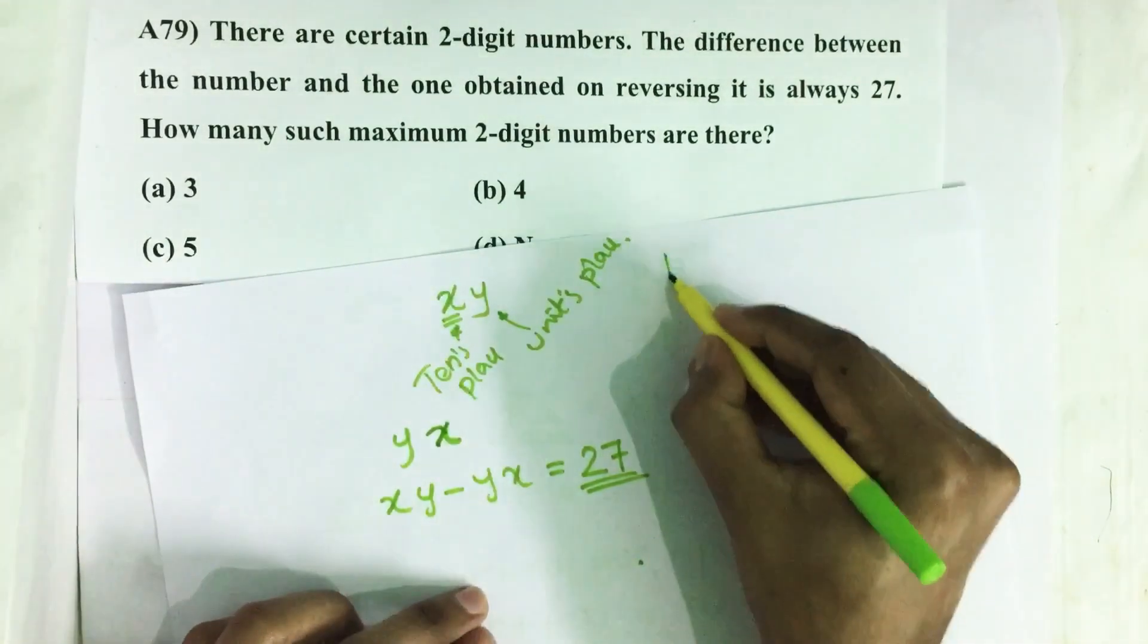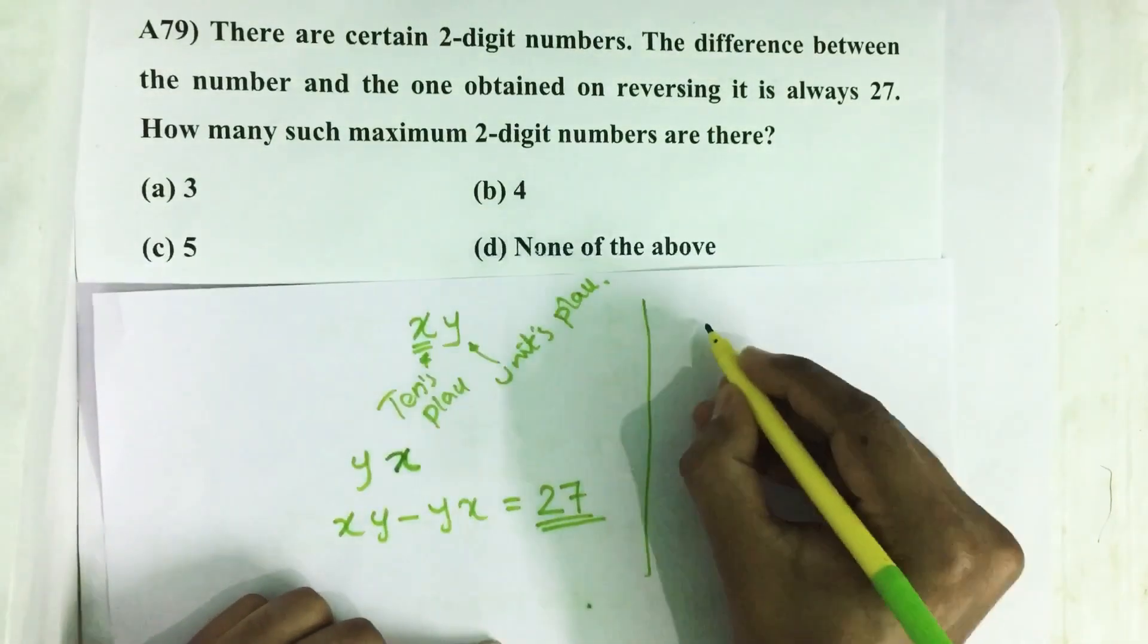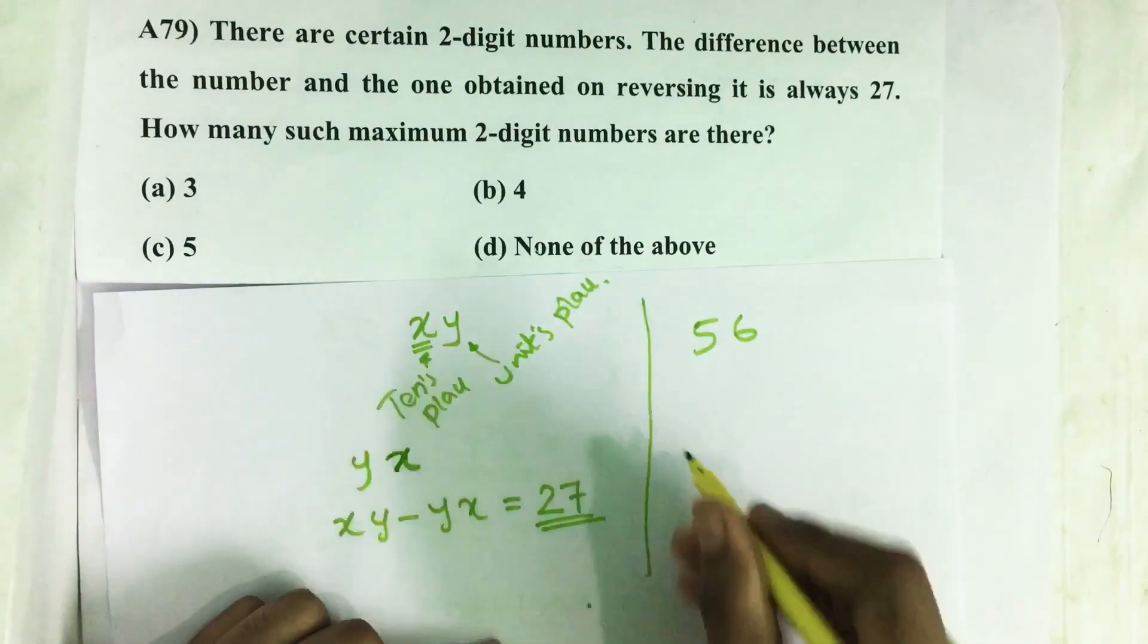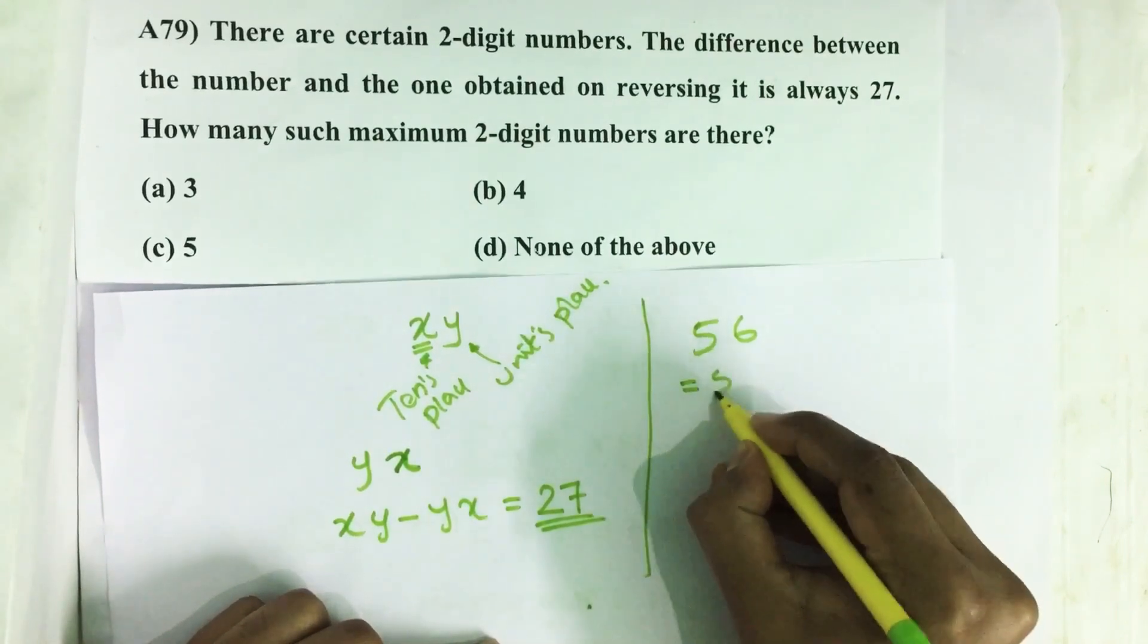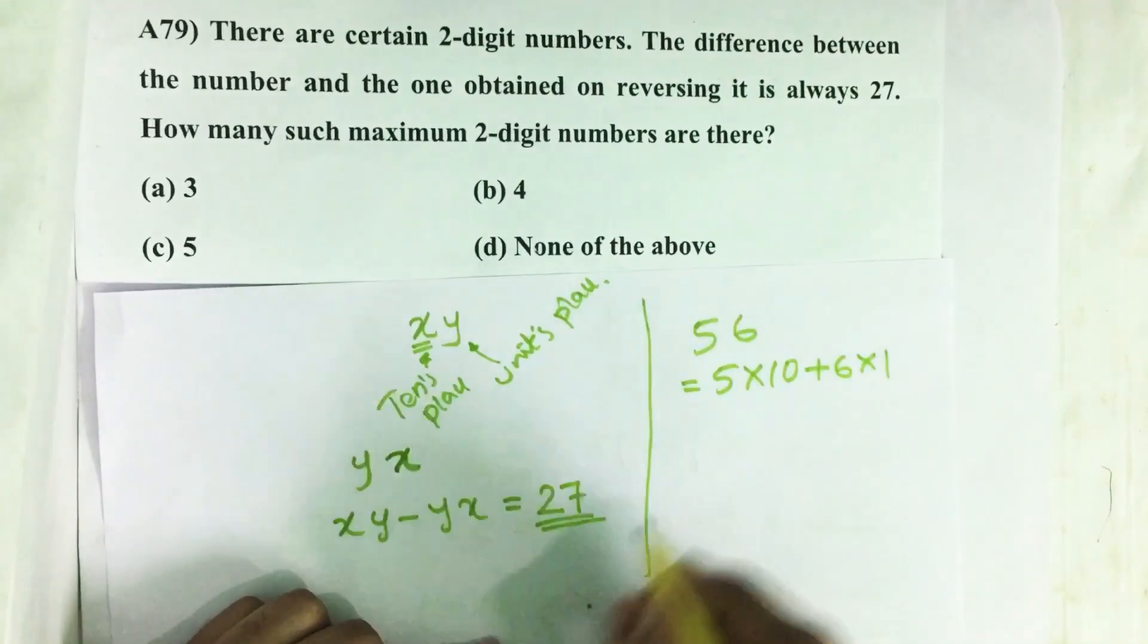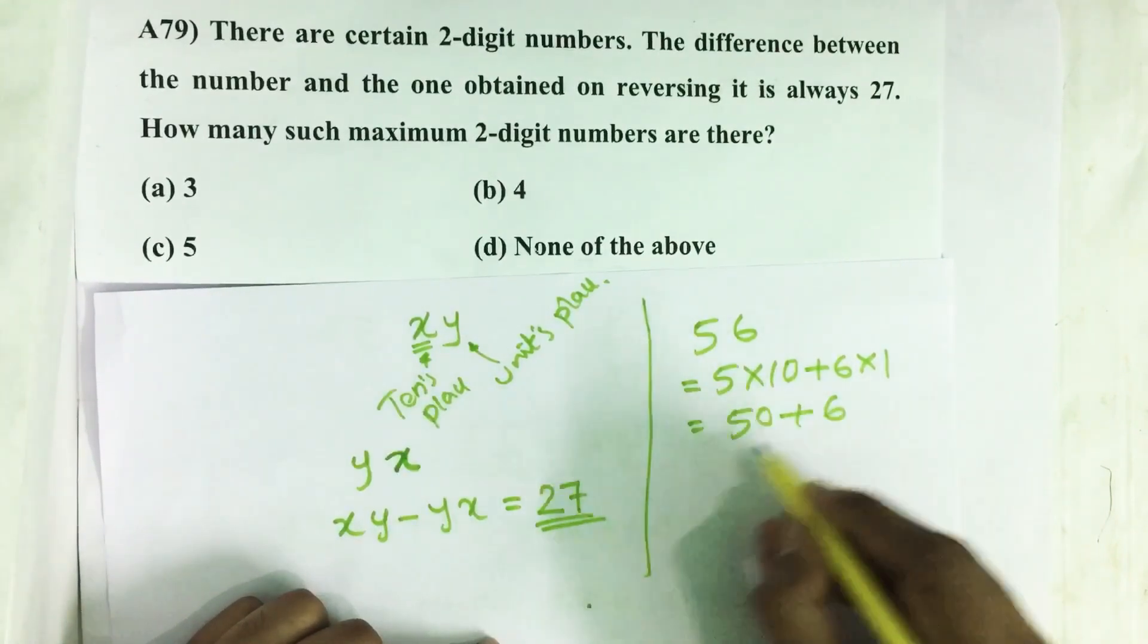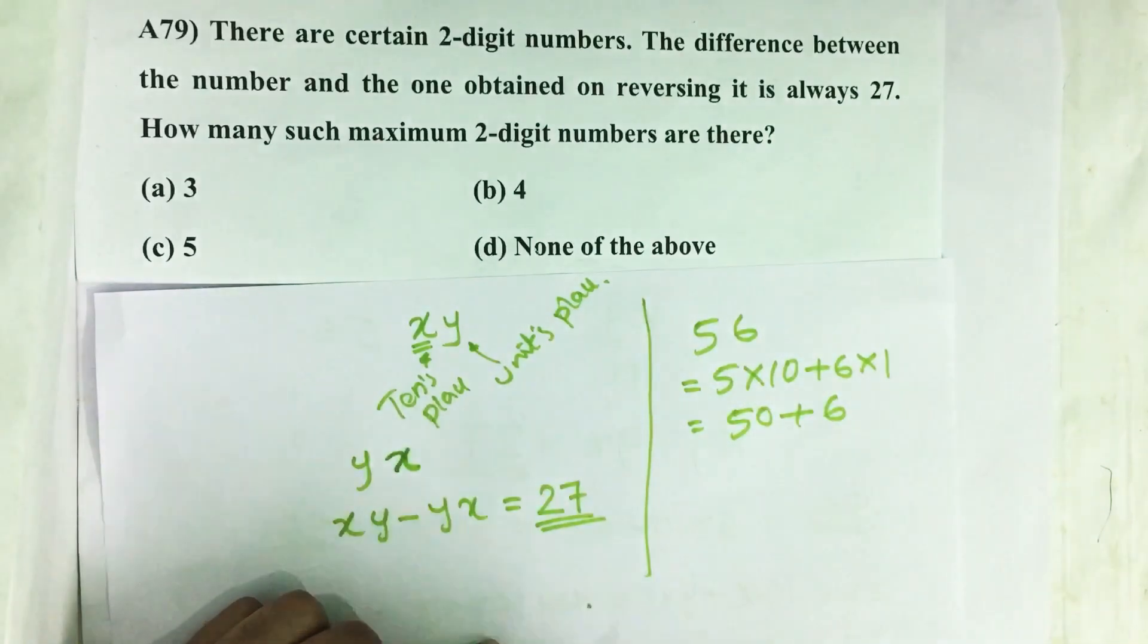Before solving this problem you need to remember one basic knowledge. Suppose 56 is a double-digit number I am considering. Then we can write this as 5 into 10 plus 6 into 1. 5 into 10 is 50, 6 into 1 is 6. So 50 plus 6 equals 56.